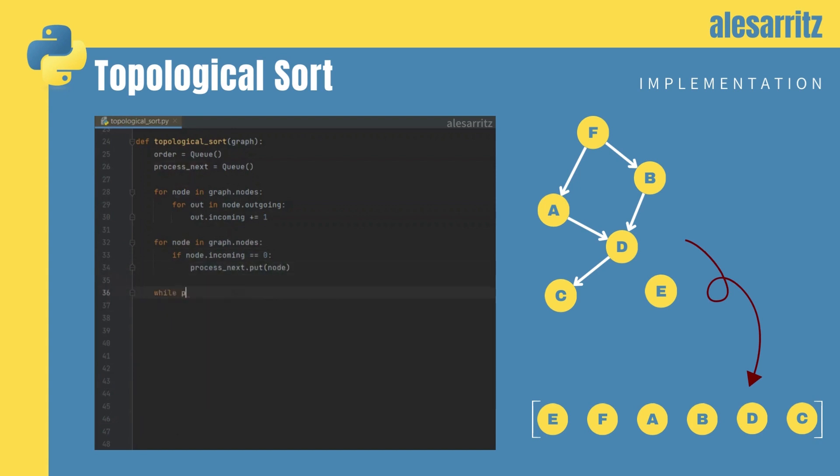After this, we can write a while loop to start processing the nodes. We dequeue the first node from ProcessNext and we go through all the nodes that belong to the node's outgoing edges. For each of those, we decrement the counter of incoming edges. This happens because the dequeued node is about to be added to the topological sort, so it's basically irrelevant.